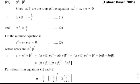Since alpha and beta are the roots of the equation ax² + bx + c = 0, the sum of roots is alpha + beta = -b/a (equation 1), and the product of roots is alpha·beta = c/a (equation 2). The required equation is y² - Sy + P = 0 (equation 3), whose roots are alpha cubed and beta cubed.